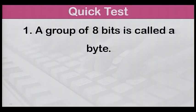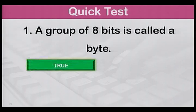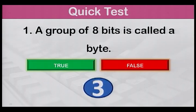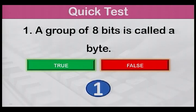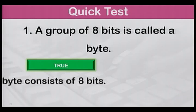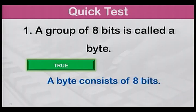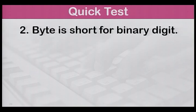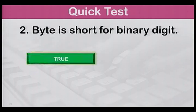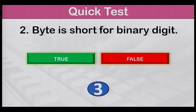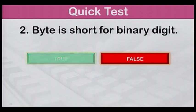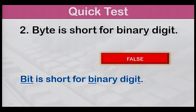Now read the following sentences carefully and state whether they are true or false. Number one: A group of eight bits is called a byte. The answer is true — a byte consists of eight bits. Number two: Byte is short for binary digit. The answer is false — bit is short for binary digit.